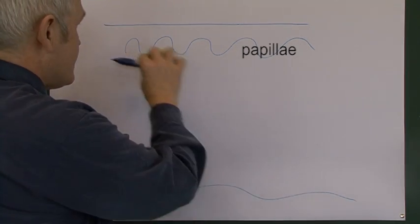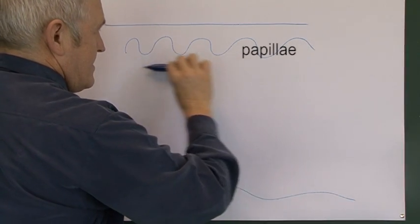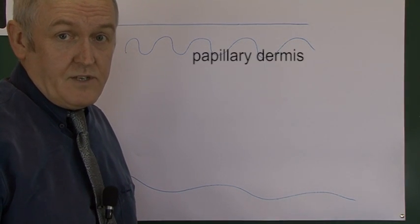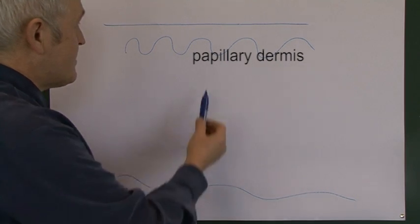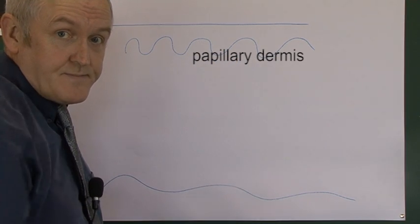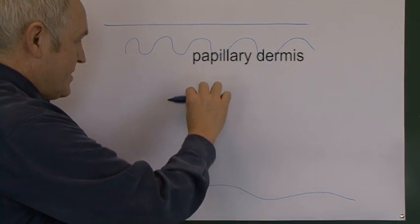So this is a dermal papillae, this is the papillary region of the dermis, the top layer. And then lower down, this area is called the reticular layer of the dermis.